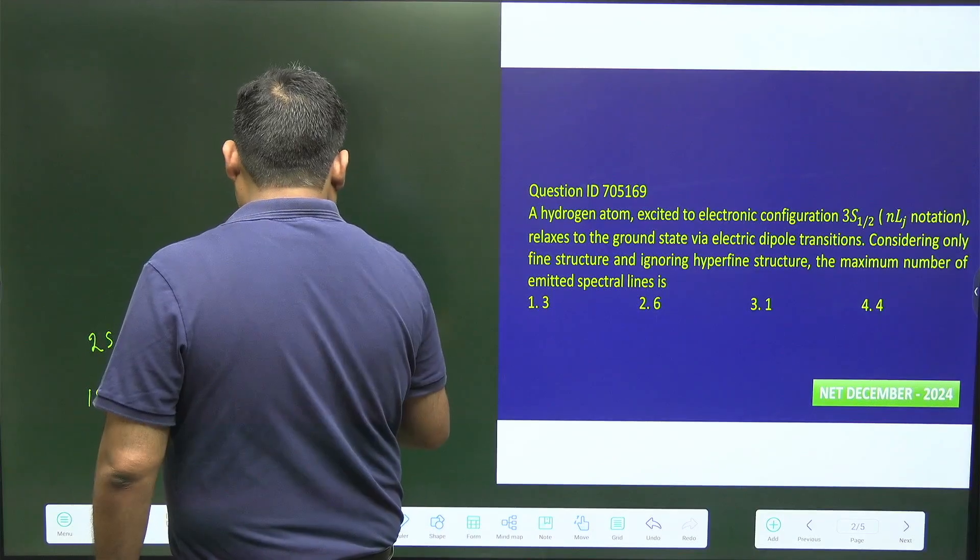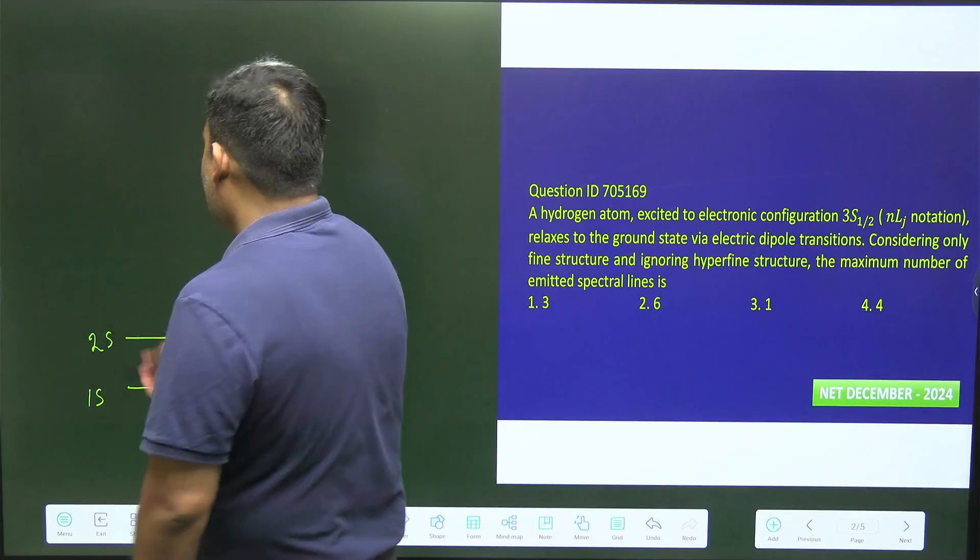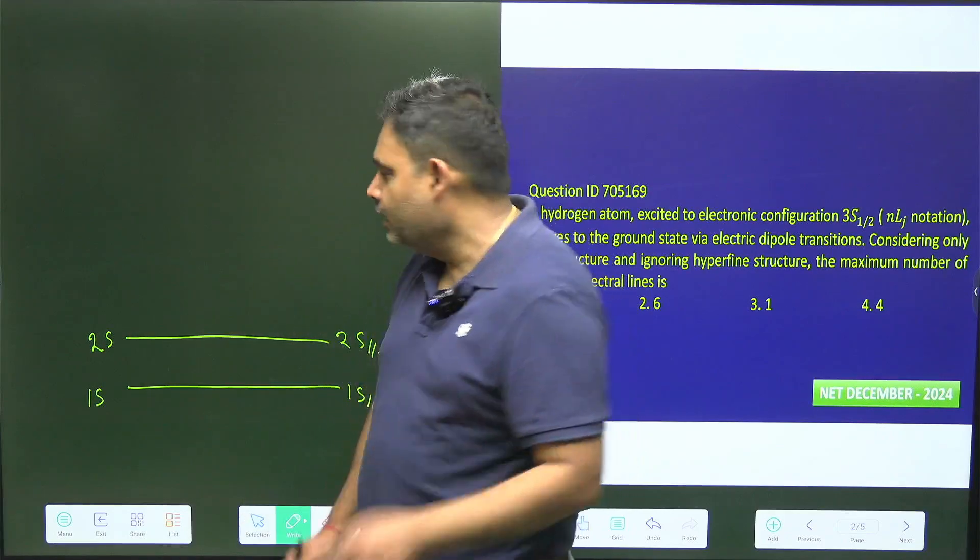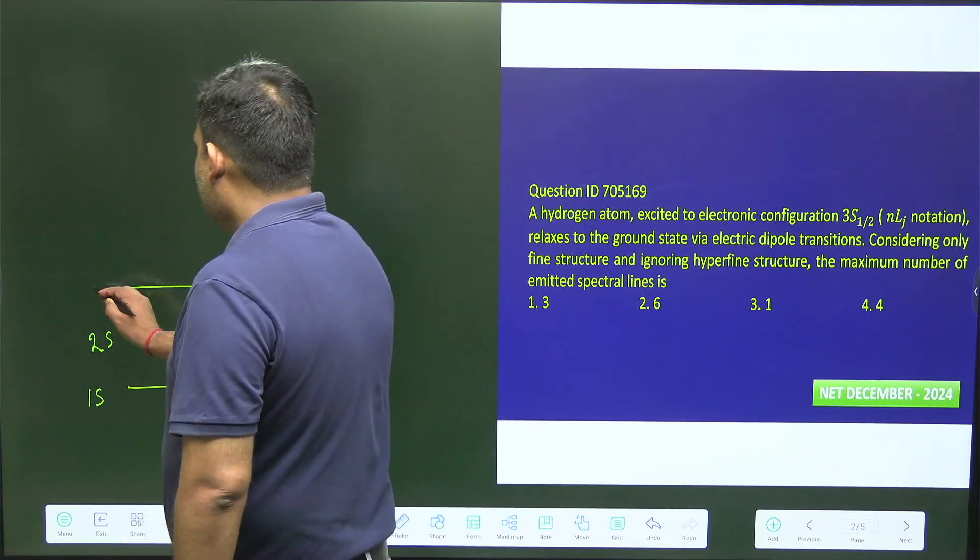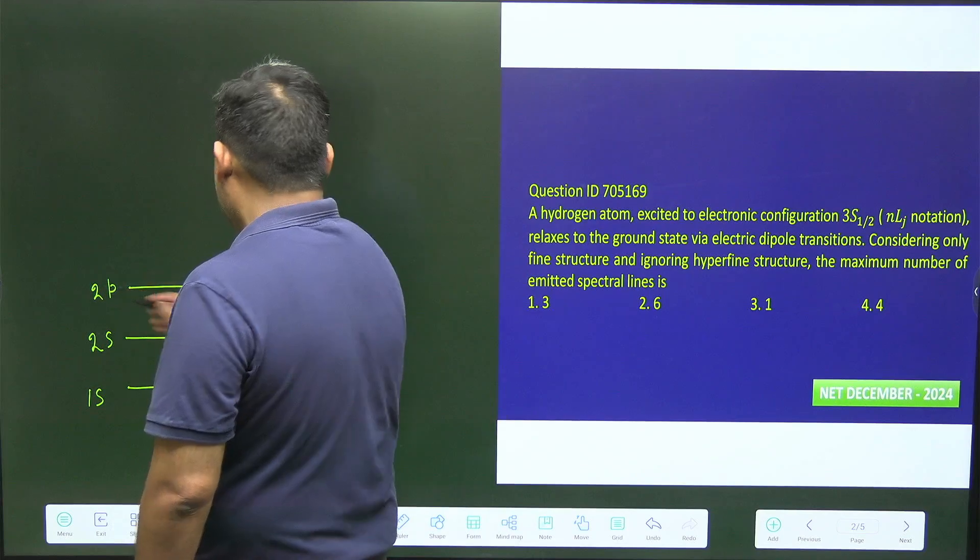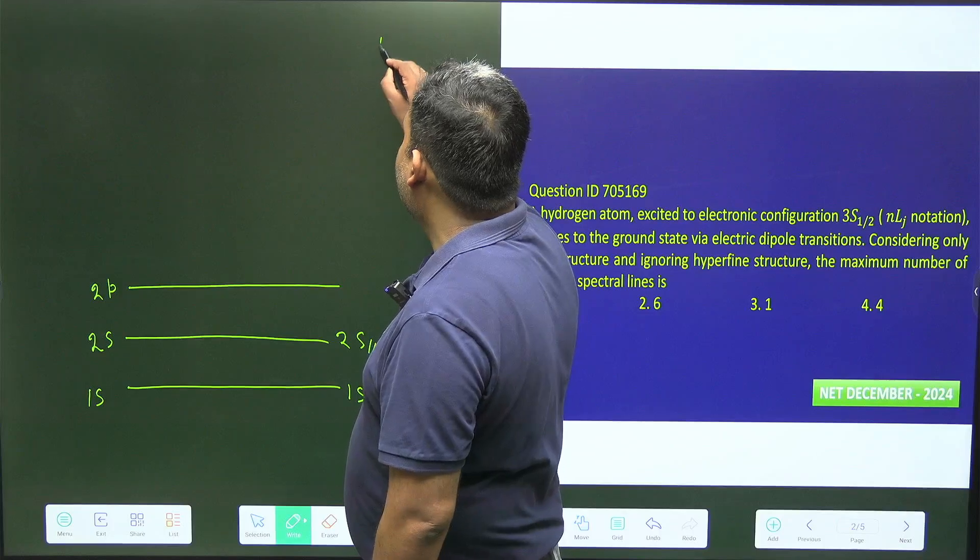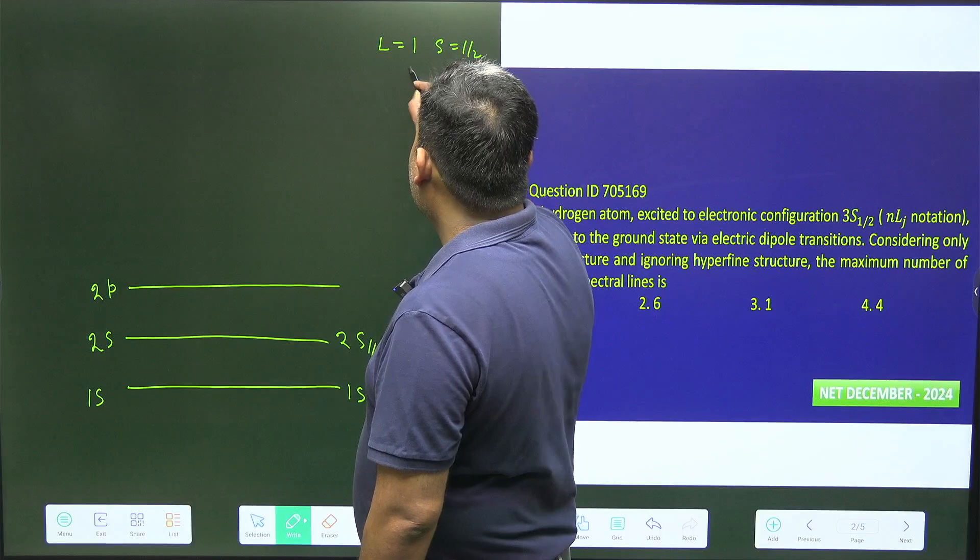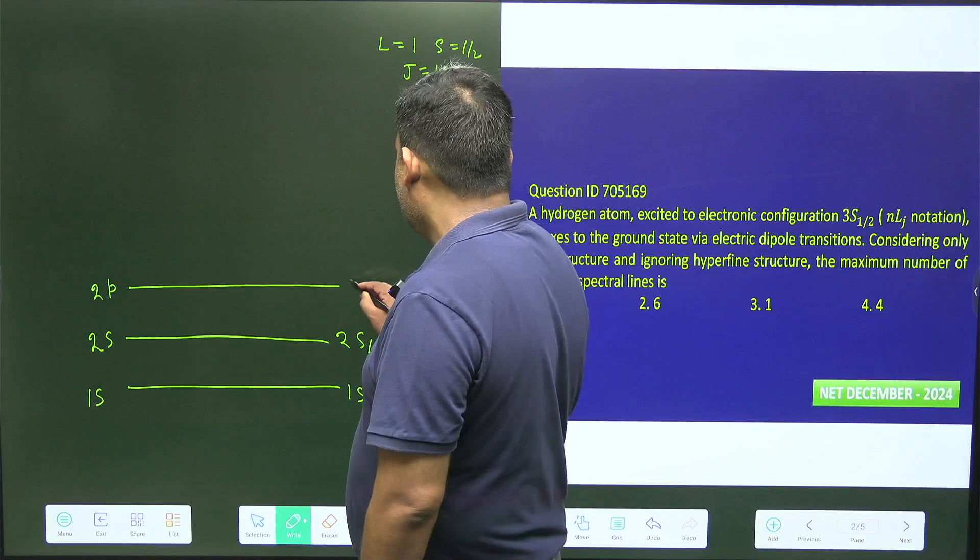So this value is 2s half. For n equals 2, l equals 0 is possible and l equals 1 is also possible. So what is going to happen? Here we have 2p which is going to split into two parts because l equals 1 and s equals half, so j equals half and 3 by 2. So it splits into two parts.